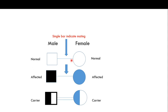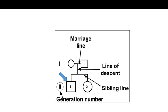If there are two lines between the male and female, it still indicates mating, but it represents cousin mating — that is, mating between close relatives.